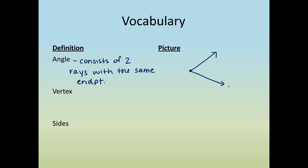Two rays. Now, the next two words are going to actually help us describe this angle. Our vertex is actually the shared endpoint. So we would consider this the vertex. It is the endpoint that the two rays share.